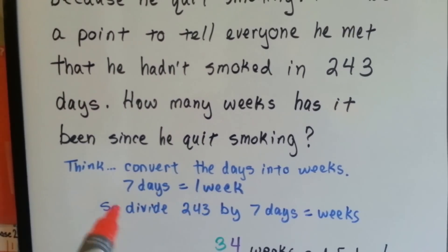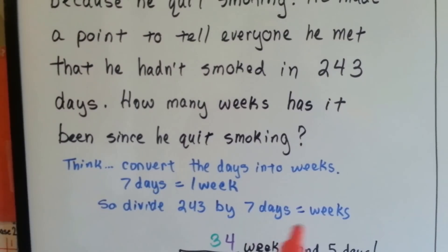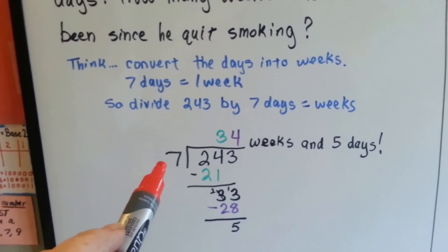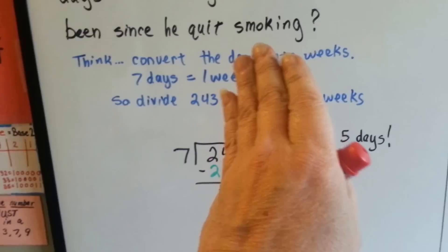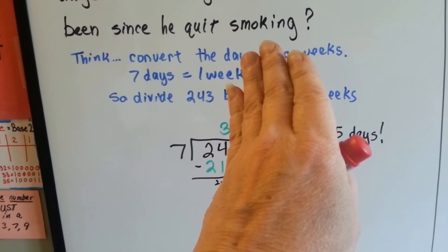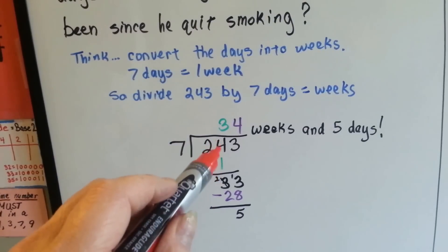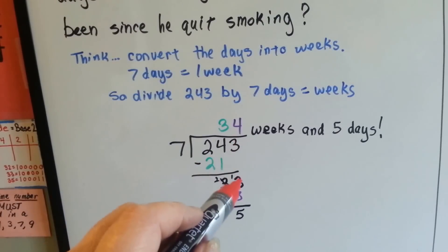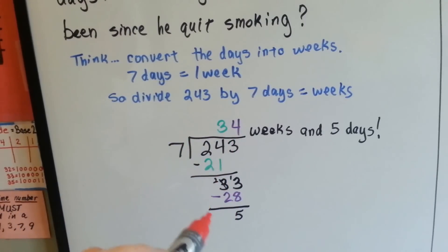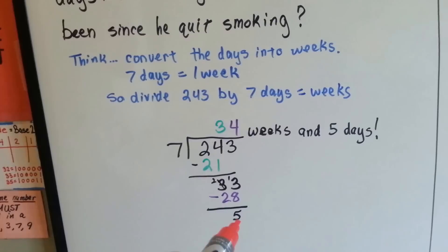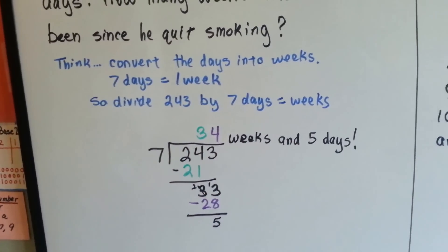If there's seven days in one week, we need to divide the 243 days by seven days, and that'll tell us the weeks. We do long division. Seven goes into 243 how many times? Well, seven can't fit into two, but it can fit into 24 three times. So we put the three above the four. Seven times three is 21. We do our subtraction. Four minus one is three, and now it's this three's turn to come down. Seven goes into 33 four times because seven times four is 28. We do our subtraction and get five, and that's how many days are left over. So we have 34 weeks and five days since he quit smoking. Good for you, Bob.